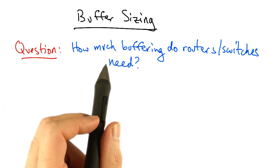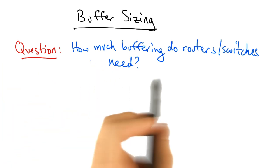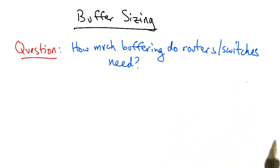So in this lesson, we'll look at an important question in switch design, which is how much buffering do routers and switches need? It's fairly well known that routers and switches do need packet buffers to accommodate for statistical multiplexing. But it's less clear how much packet buffering is really necessary.